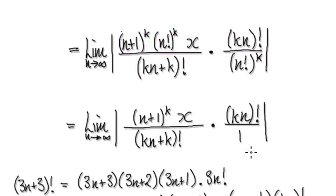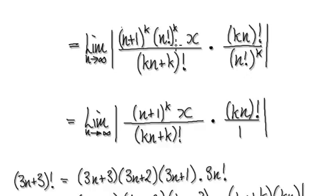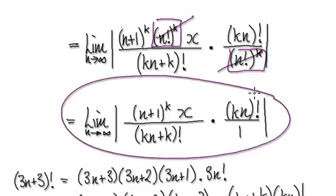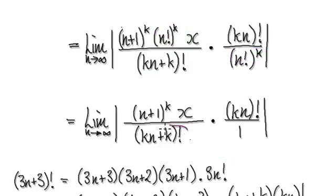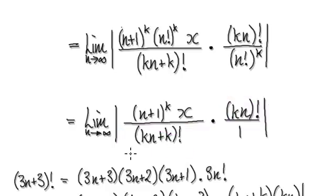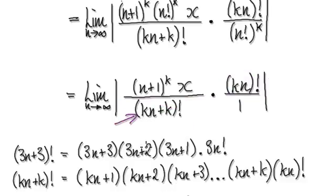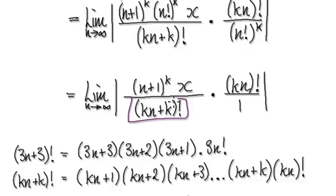So now, this thing here will cancel out with this — so these two will cancel out, and you're left with this. You should have a hunch that this might somehow cancel out with this. But first we need to understand what's going on here: what does it mean to have kn + k factorial, where n is heading towards infinity and k is a constant? So we are trying to understand this.